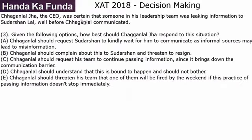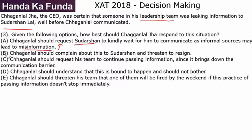One more question from this set. Chagan Lal Jha, the CEO, was certain that someone in his leadership team was leaking information to Sudarshan Lal, the founder. How best could Chagan Lal Jha respond to this situation? Option A: Chagan Lal should request Sudarshan to kindly wait for him to communicate, as informal sources may lead to misinformation. This is a valid, reasonable option — not drastic. Option B: Chagan Lal should complain to Sudarshan and threaten to resign. Bad idea — drastic steps and ultimatums are always bad.